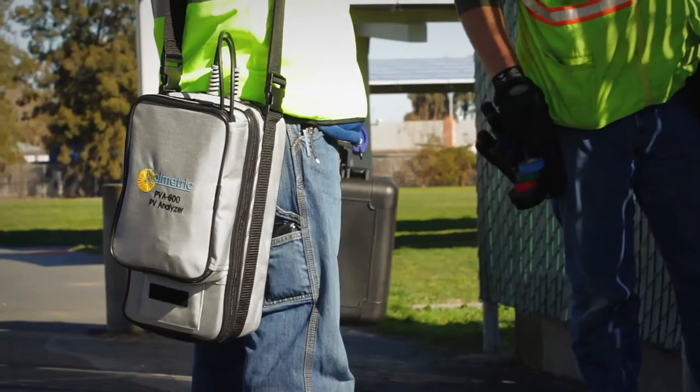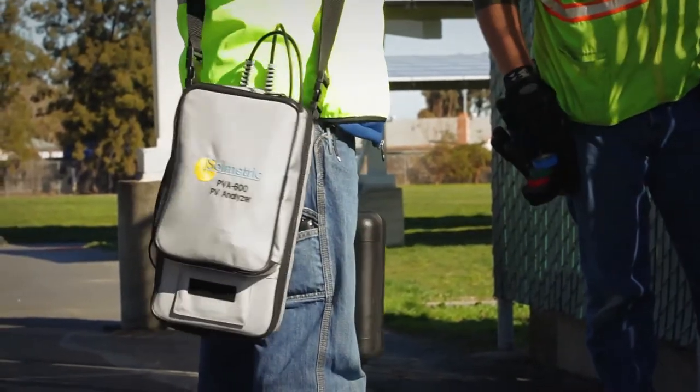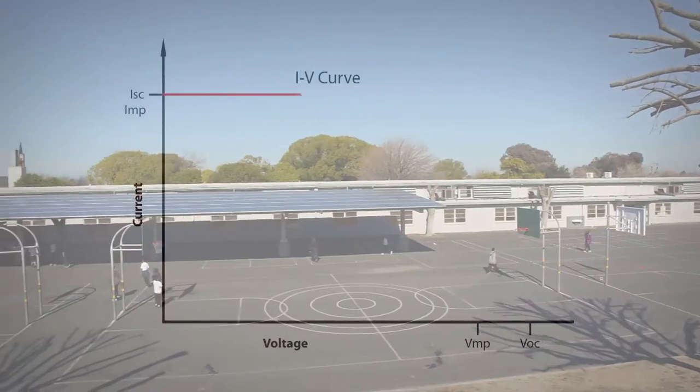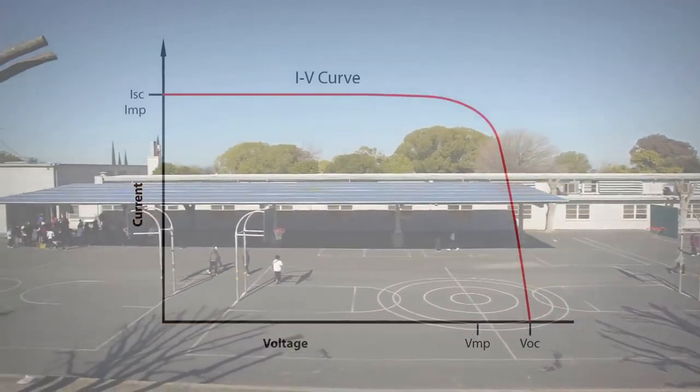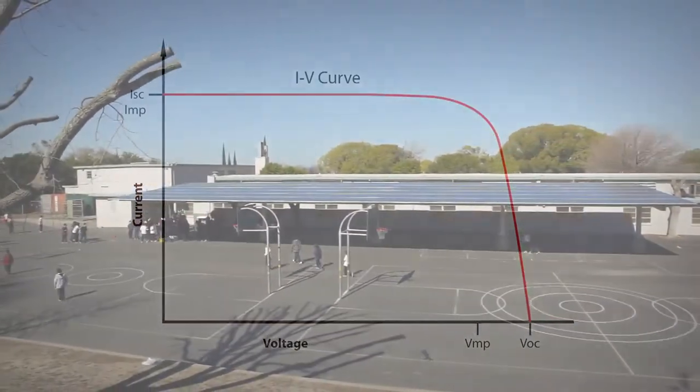The Solmetric PV Analyzer is a complete electrical test solution for verifying photovoltaic array performance. The PV Analyzer can acquire an IV curve trace for a PV module, string of modules, or multiple strings of modules.